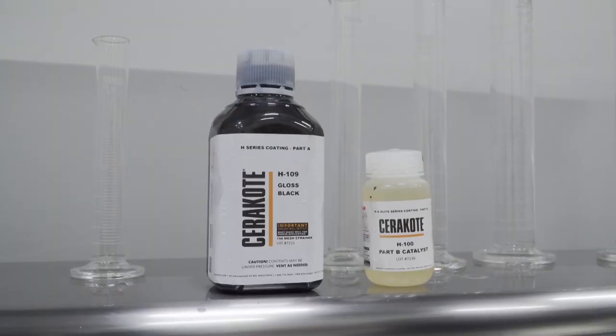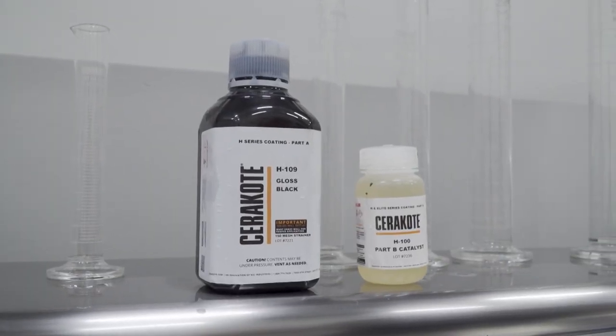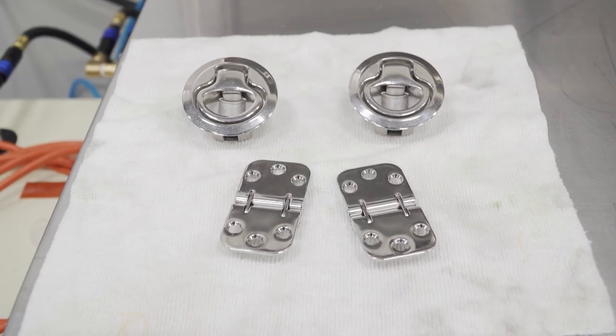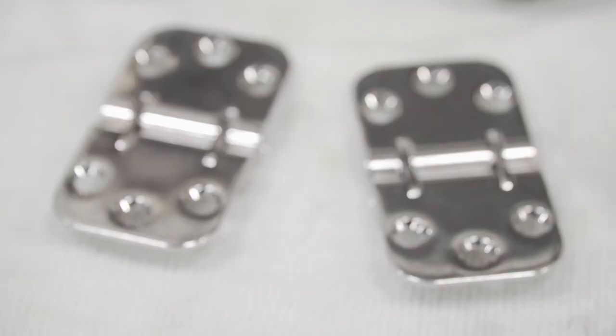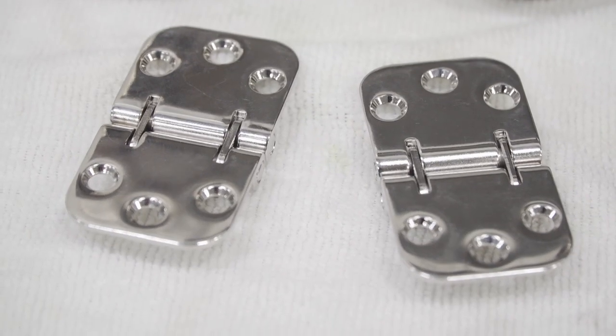Cerakote is a ceramic coating that we bake onto hardware. It's incredibly tough. We like it because we can take a stainless steel fitting and we can make it virtually any color we want.